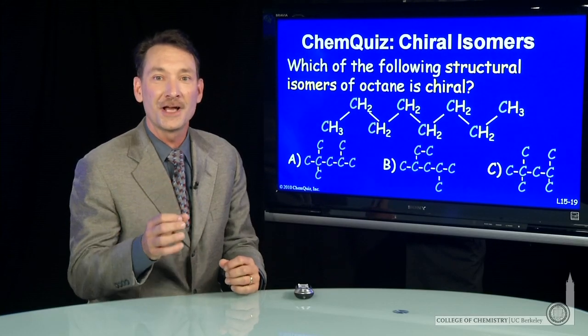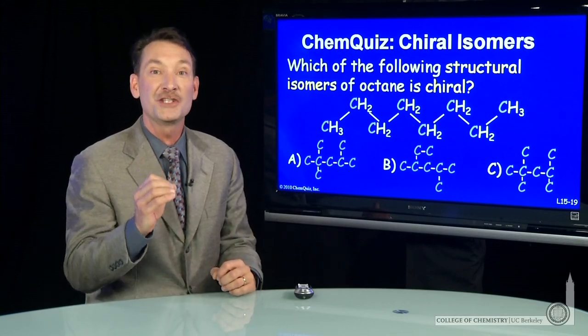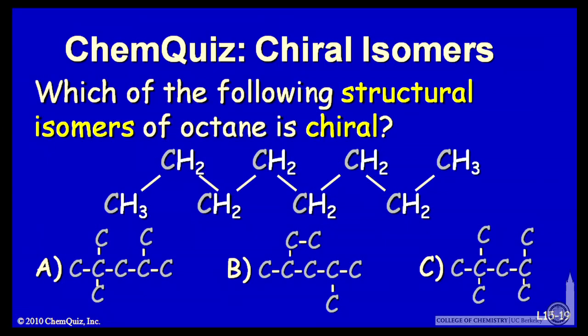Let's look at some structural isomers and see if we can determine which is chiral. The molecule octane contains eight carbons. Here are three structural isomers. Which of those is chiral? Think about that for a minute and make a selection.